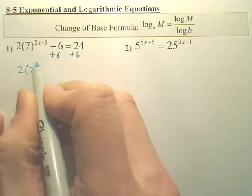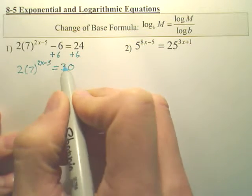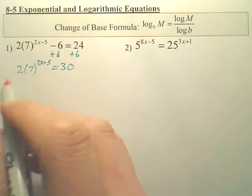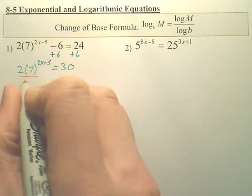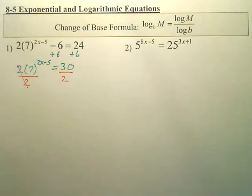And then we have 2 times 7 to the 2x minus 5 equals 30. Now the next step is to get rid of that 2. To get that 2 off, well it's connected by multiply, so the opposite of multiply is divide. But we've got to do it to both sides.